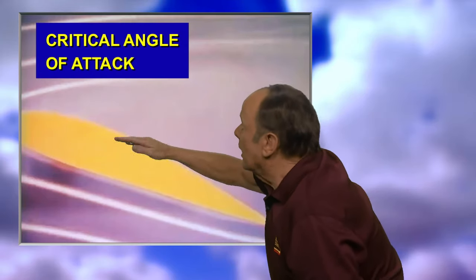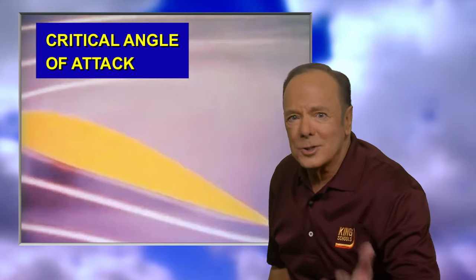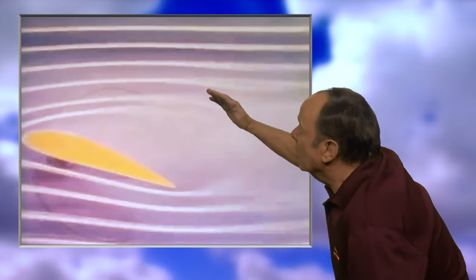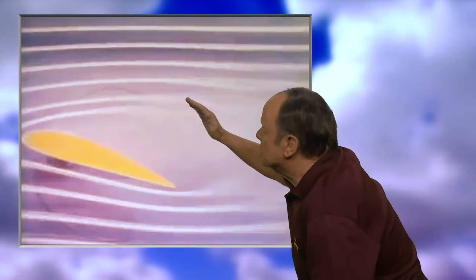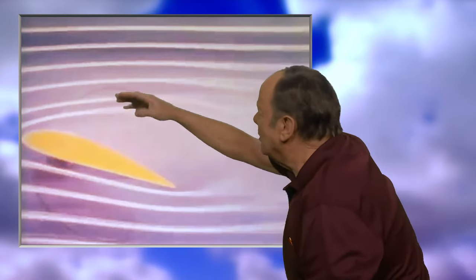The point where you increase the angle of attack any more and the lift is destroyed is called the critical angle of attack. As the wing increases past the critical angle of attack, the relative wind can no longer conform to the surface of the wing. When it separates from the surface, it backfills and burbles and eddies, the lift is destroyed, and the aircraft is said to have aerodynamically stalled. Each airplane stalls at a specific angle of attack — the exact angle is really designed into the wing.